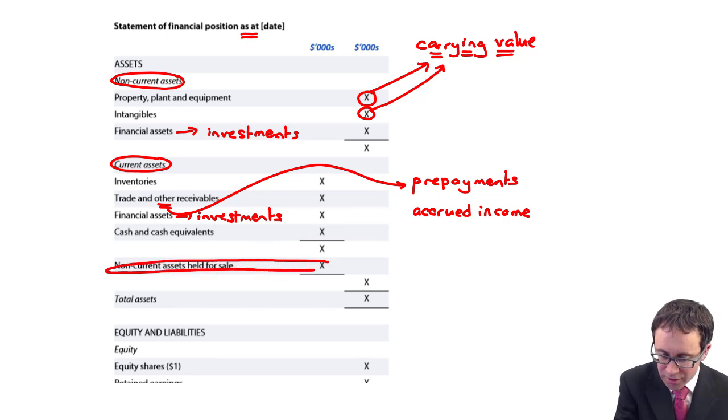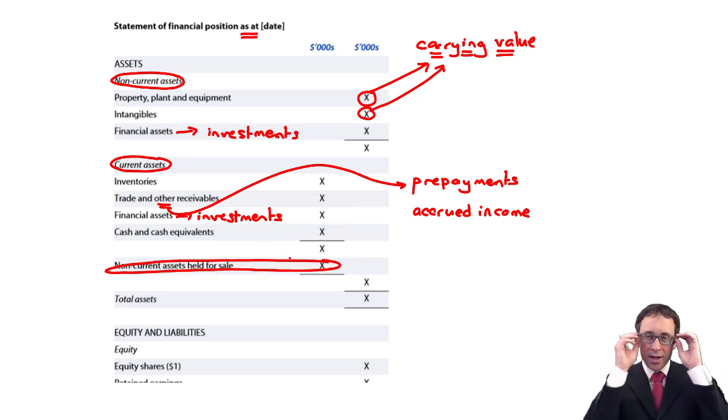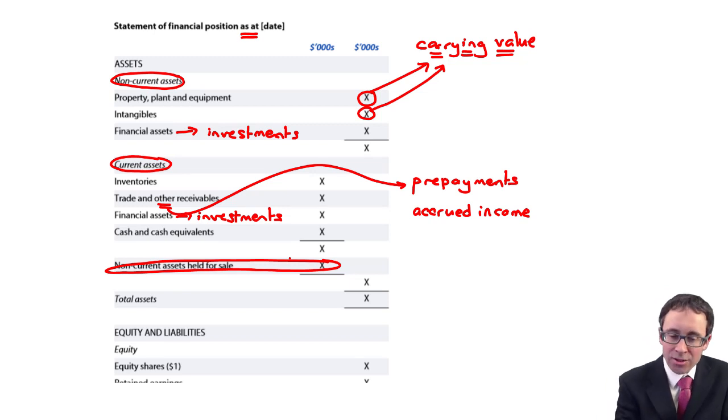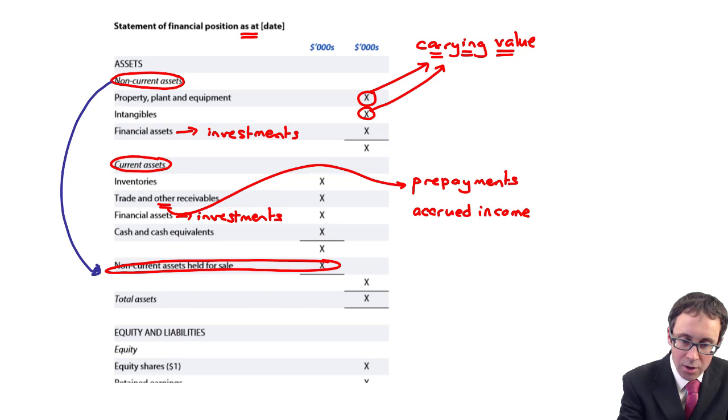So whereby you've gone through there and recognized some income, but you've not yet received the cash. Again, we'll see a lot more of that when we get to looking at the revenue standard and IFRS 15. Again, you all of a sudden are starting to see these bits that are new, non-current assets held for sale. So that's a new accounting standard that you'll go through and see throughout the course.